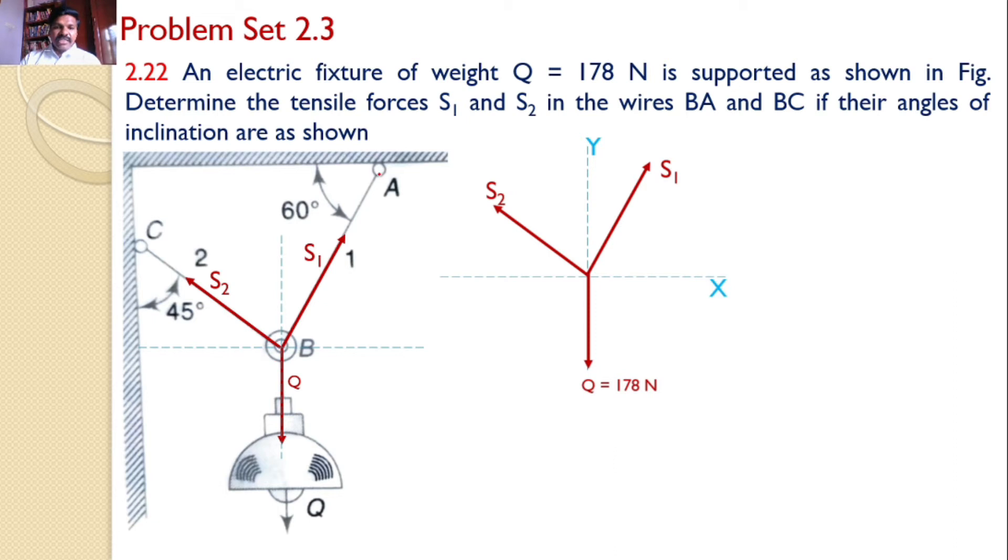Next, most important point is to identify the angles. The Q acts along the Y axis, but the forces S1 and S2 are inclined forces. Given that the string AB makes an angle 60 degrees with the horizontal, that means this S1 makes 60 degrees with the horizontal.